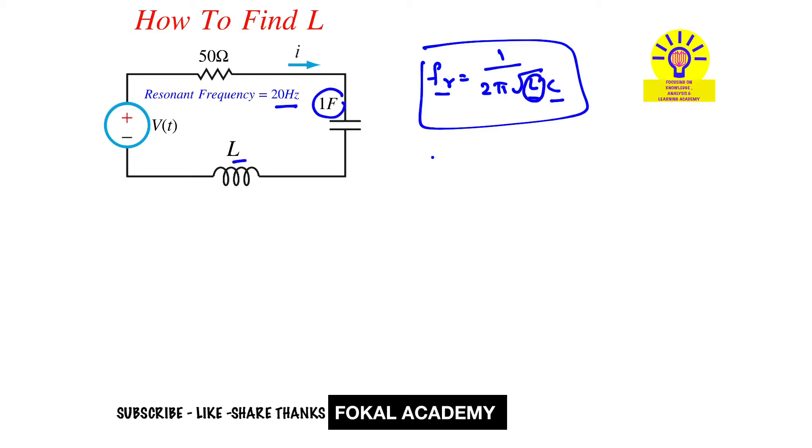From this we get the inductance value. 20 hertz equals 1 over 2π times the square root of L. Since C is 1 faraday, this equals square root of L equals 1 over 2π times 20.